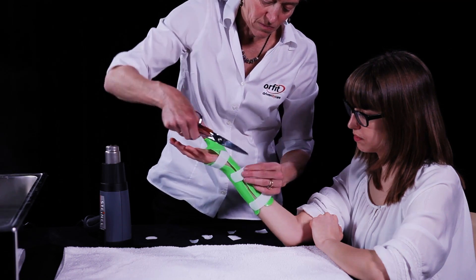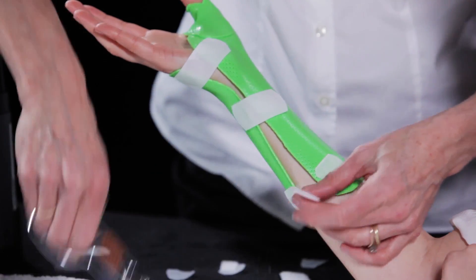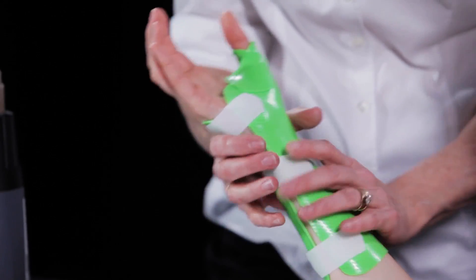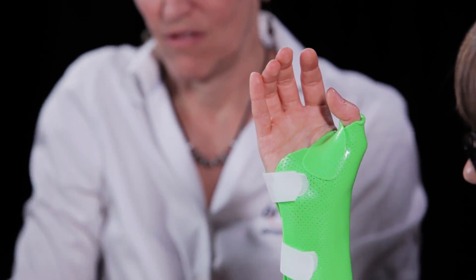The orthosis should secure the wrist in slight extension and the thumb in a functional position while allowing full flexion and extension of the fingers.